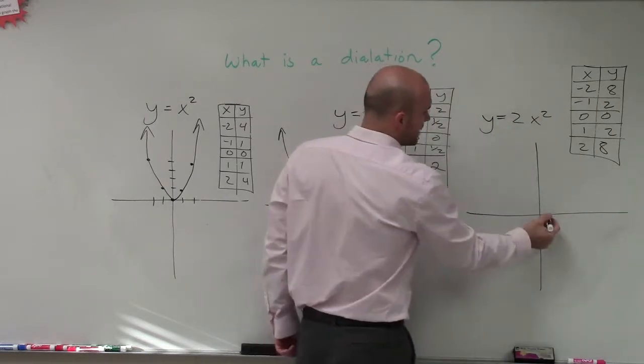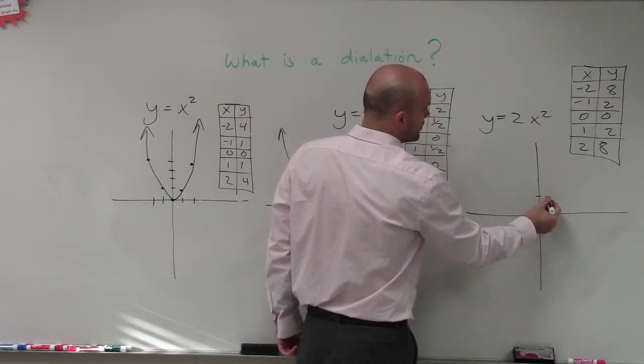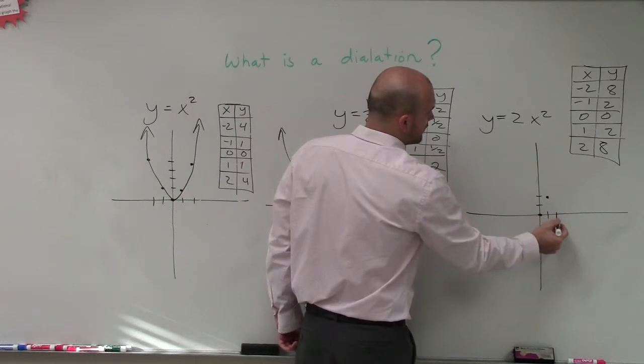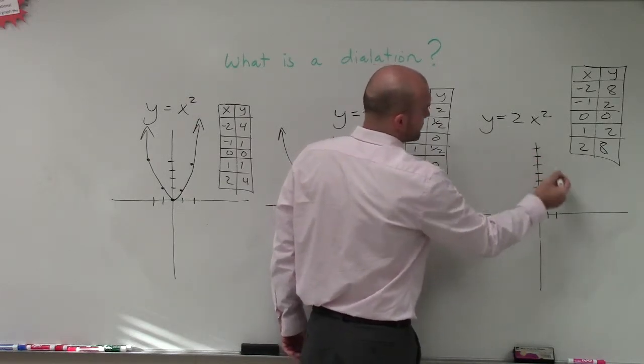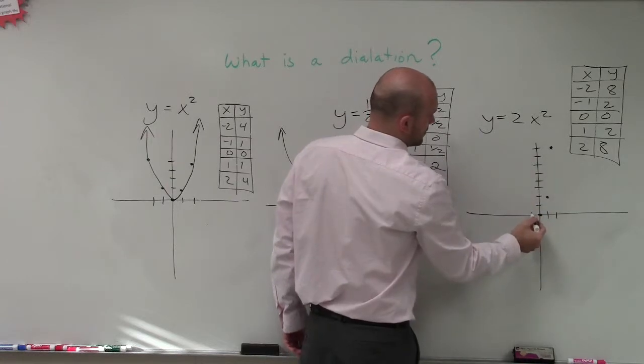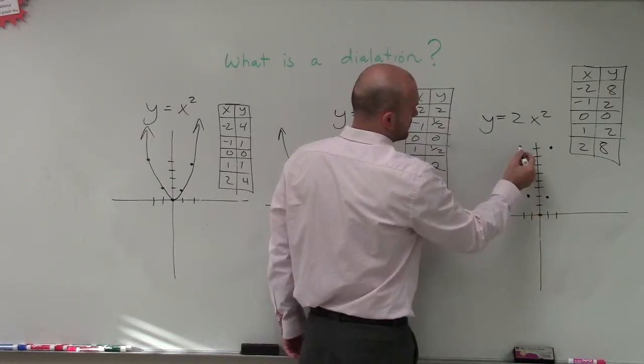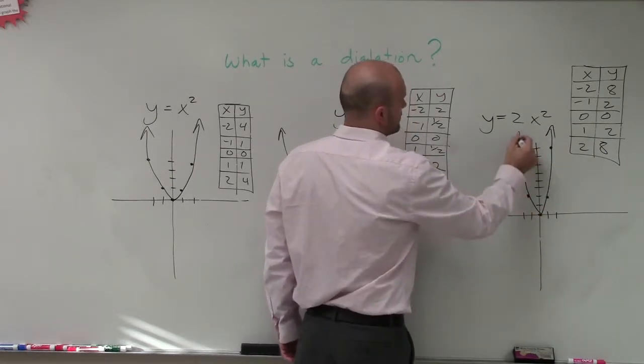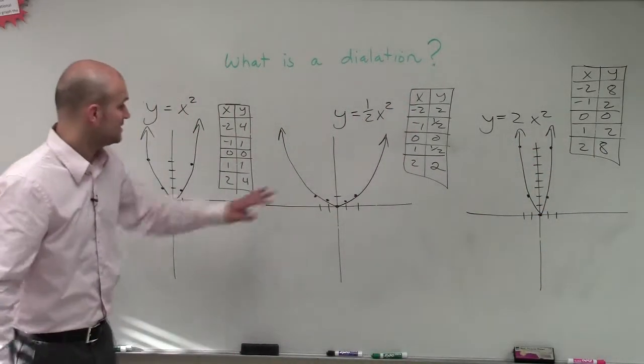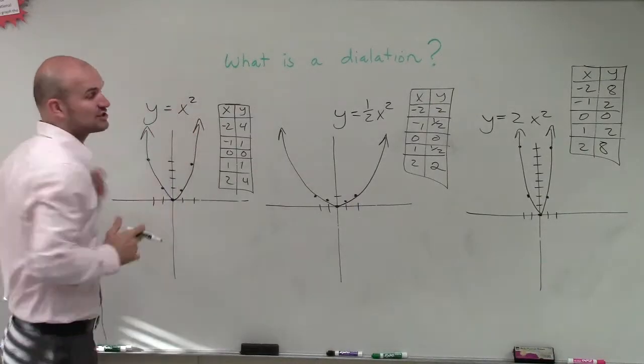So when I look at this graph, when I go over 1, now I go up 2. And when I go over 2, now I go up 8. 1, 2, 3, 4, 5, 6, 7, 8. And that works on the left side. So you can see this graph. This graph is going to look much different than my x squared graph.